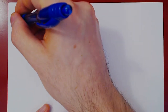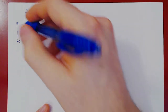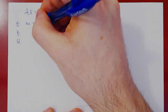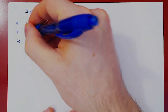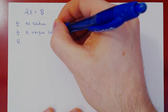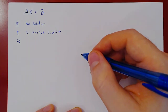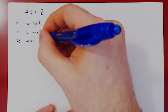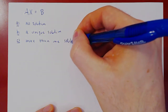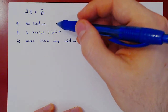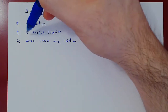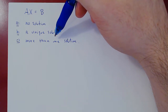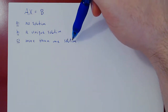Now we have an obvious statement. Either one of three cases A, B, or C must be true: either the system has no solution, a unique solution, or more than one solution. You can only have no solution or a unique solution, and if it's neither of those, the only thing left is two or more solutions.